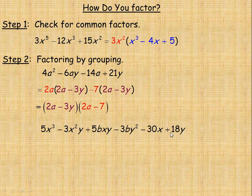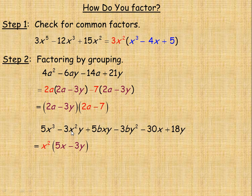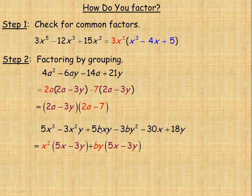Now we're going to do an example with six terms. I'm grouping the first two, the middle two, and the last two together. For the first two terms, there's an x cubed and an x squared, so we common factor x squared out: 5x cubed divided by x squared gives 5x, and negative 3x squared y divided by x squared gives negative 3y. The middle two terms both have b and y, so we factor by out: dividing by by gives 5x from the first term, and negative 3y from the second (since y squared divided by y is y).